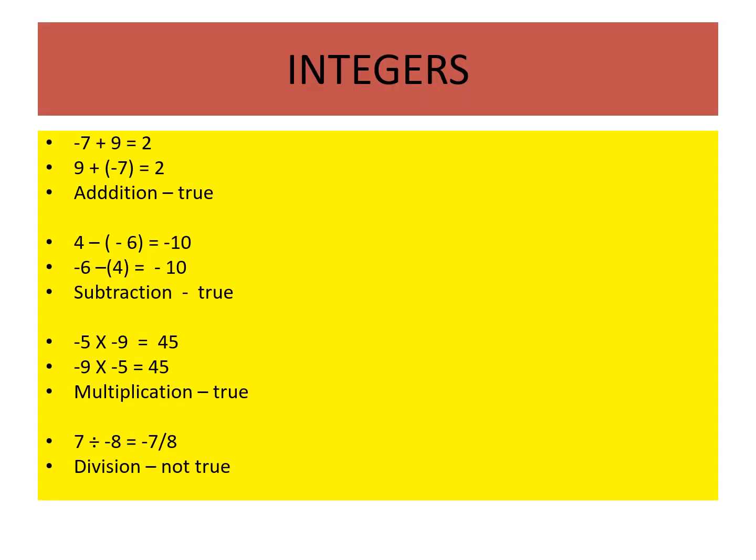For integers: addition, subtraction, and multiplication are commutative, but division is not true — we get a rational number. So for integers, commutative property holds for addition, subtraction, and multiplication, but not for division.